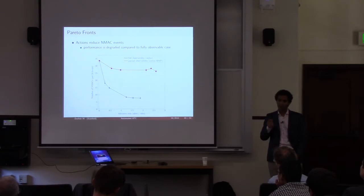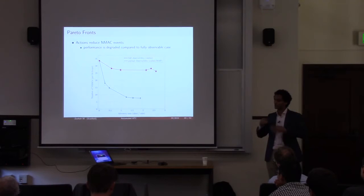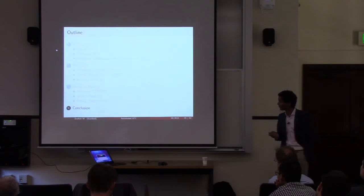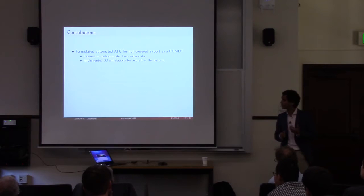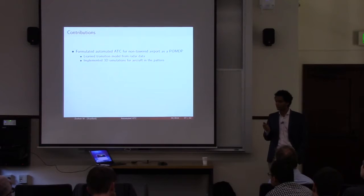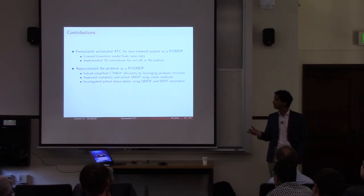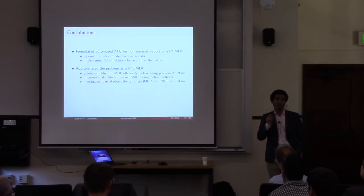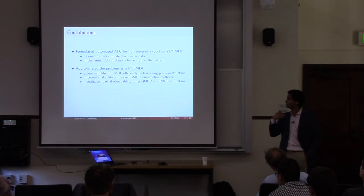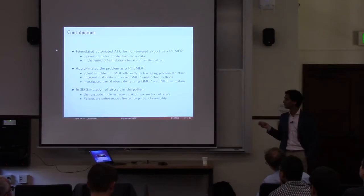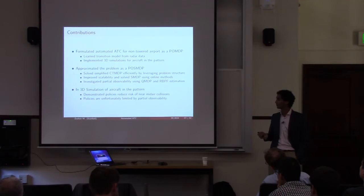This leads me to my conclusion. To summarize my contributions: I formulated an automated air traffic control system for non-towered airports, investigated how we can learn the transition model for these models from real-world data, implemented 3D simulations to evaluate the policies, and specifically approximated the problem as a POSMDP, then used three different methods — restricting to exponential time distributions, using online methods to solve the semi-Markov problem, and combining estimation with QMDP to deal with partial observability. In simulations, policies do reduce the risk of mid-air collisions, but are unfortunately still limited by partial observability.